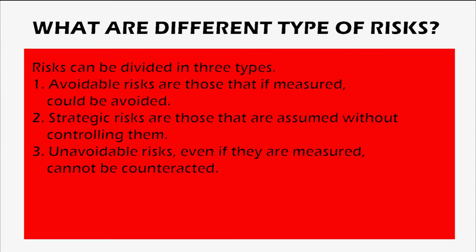Risks can be divided into three types. Avoidable risks are those that, if measured, could be avoided. Strategic risks are those that are assumed without controlling them. And unavoidable risks, even if they are measured, cannot be counteracted.